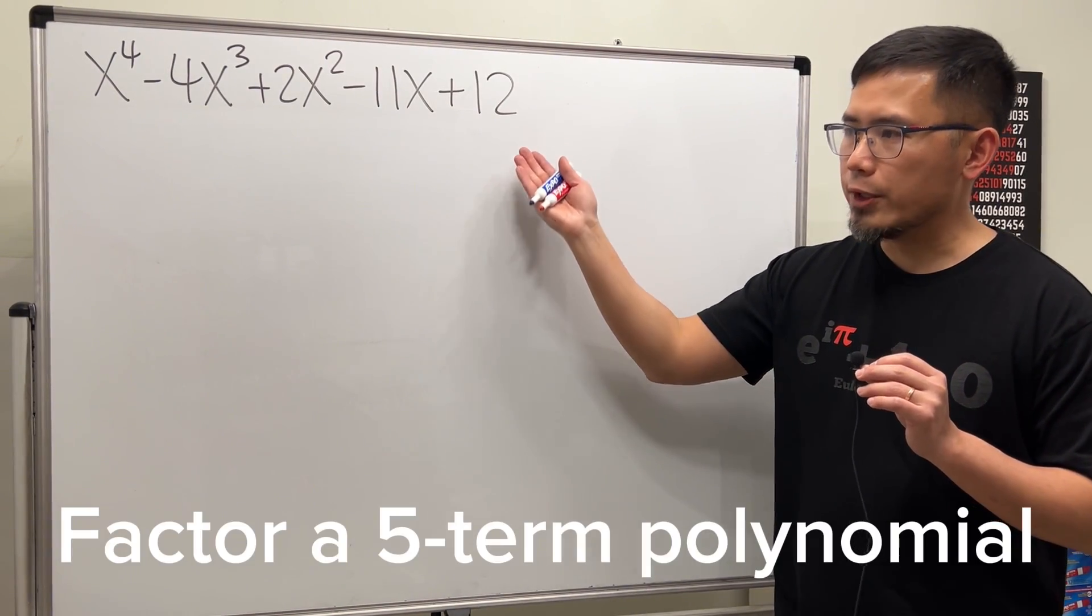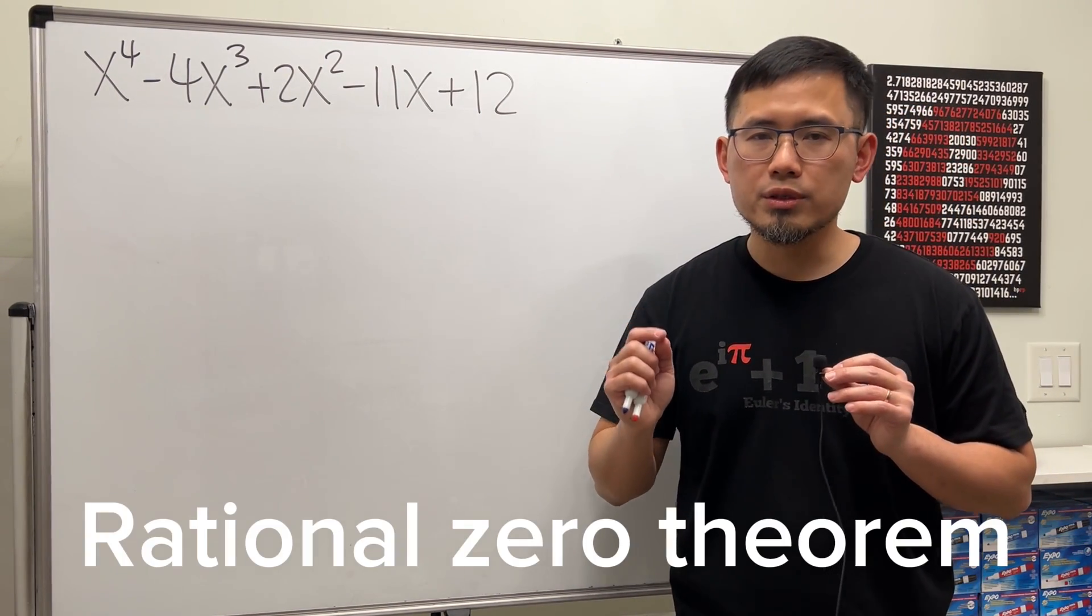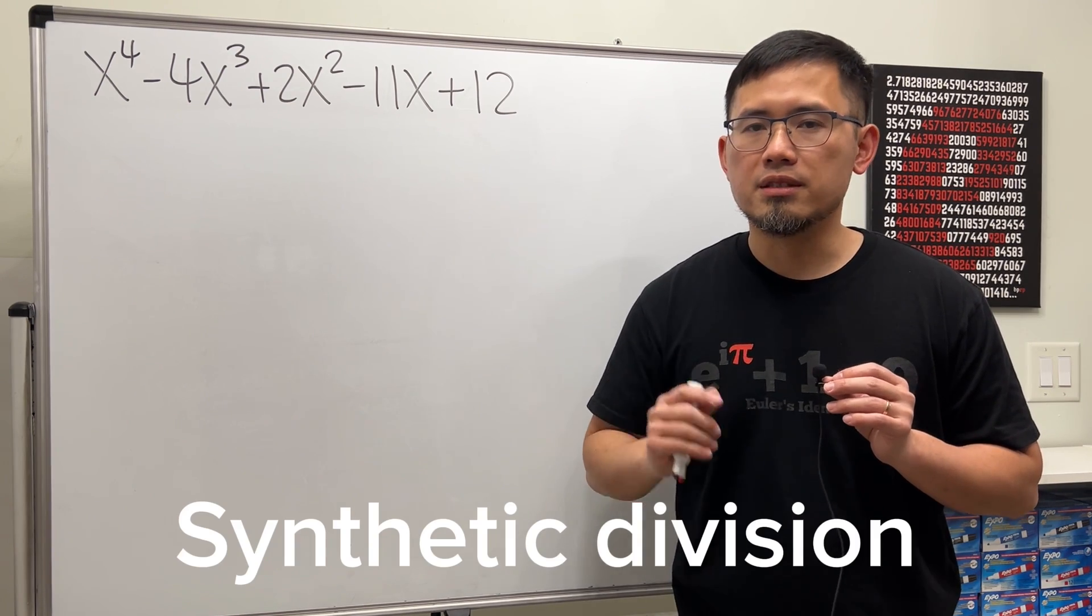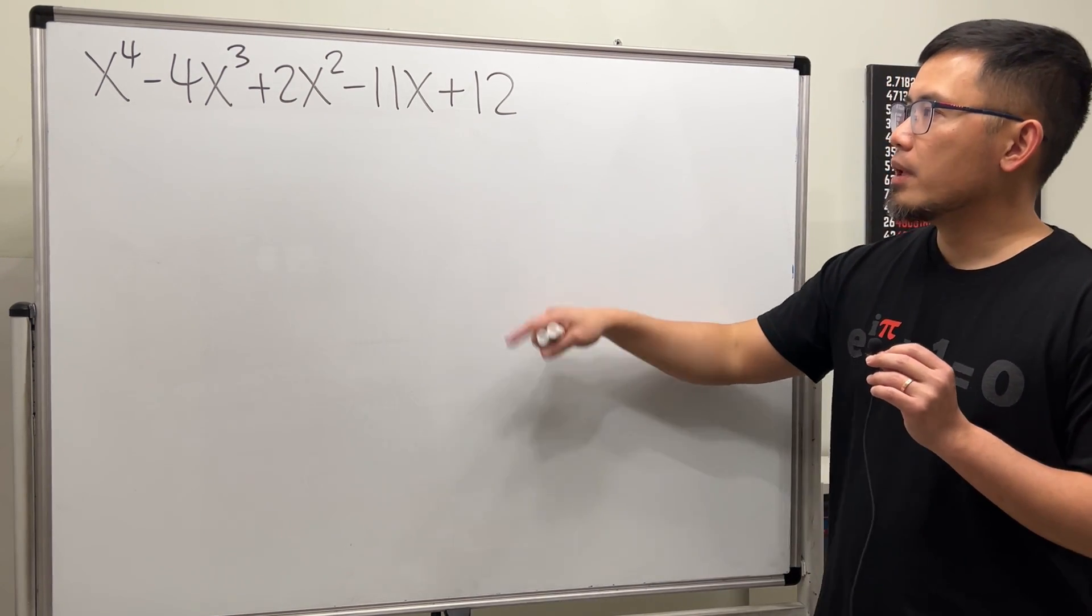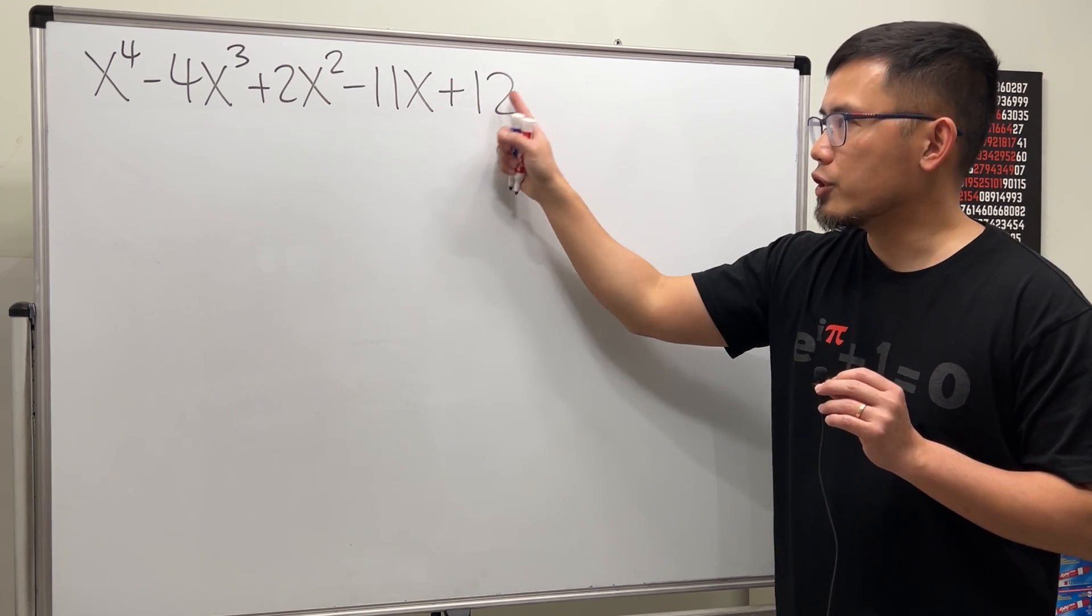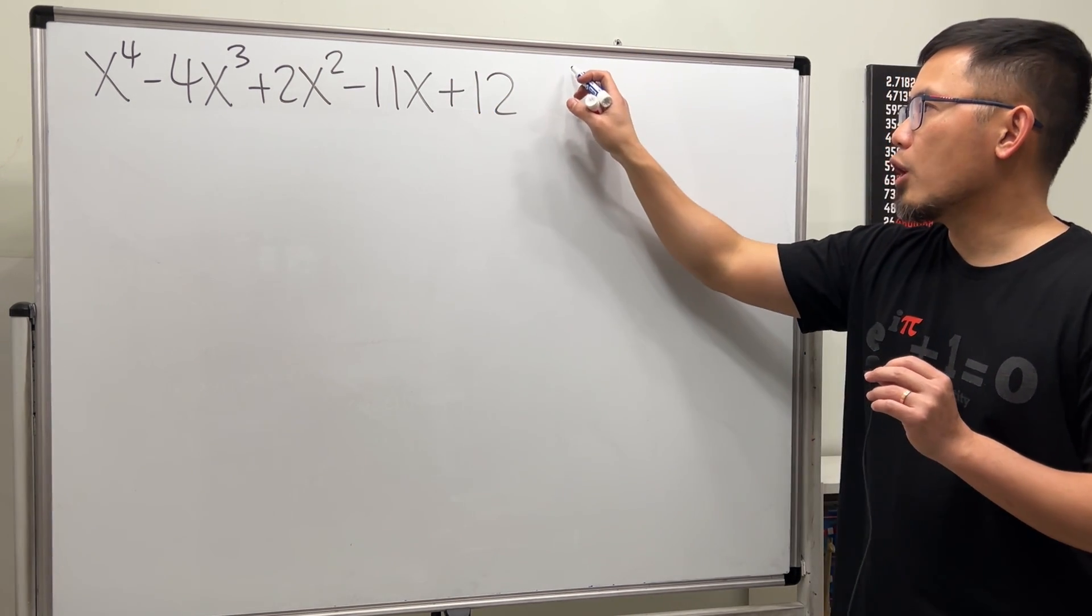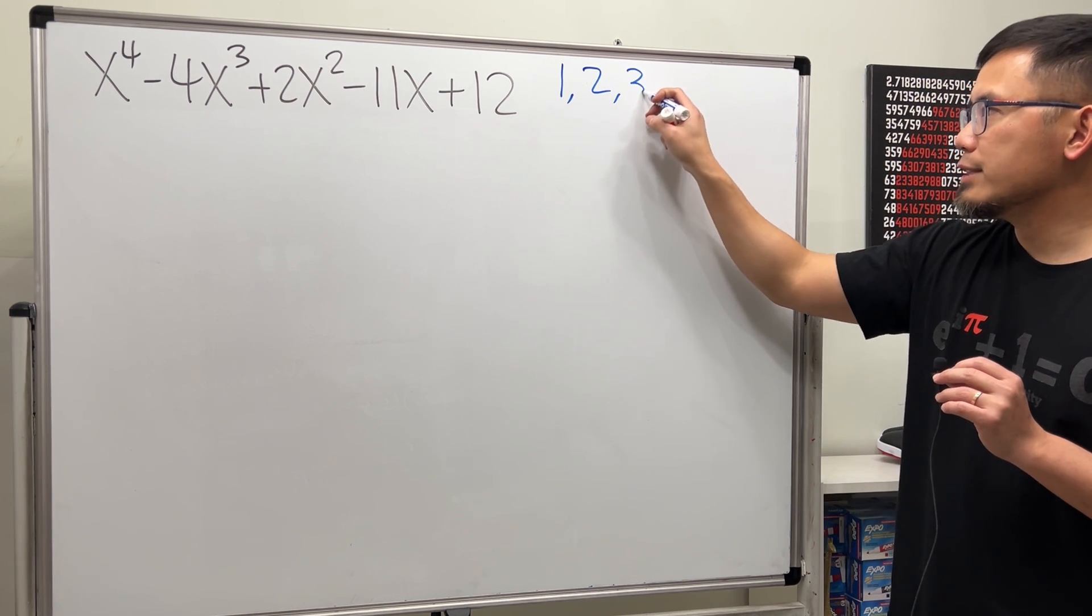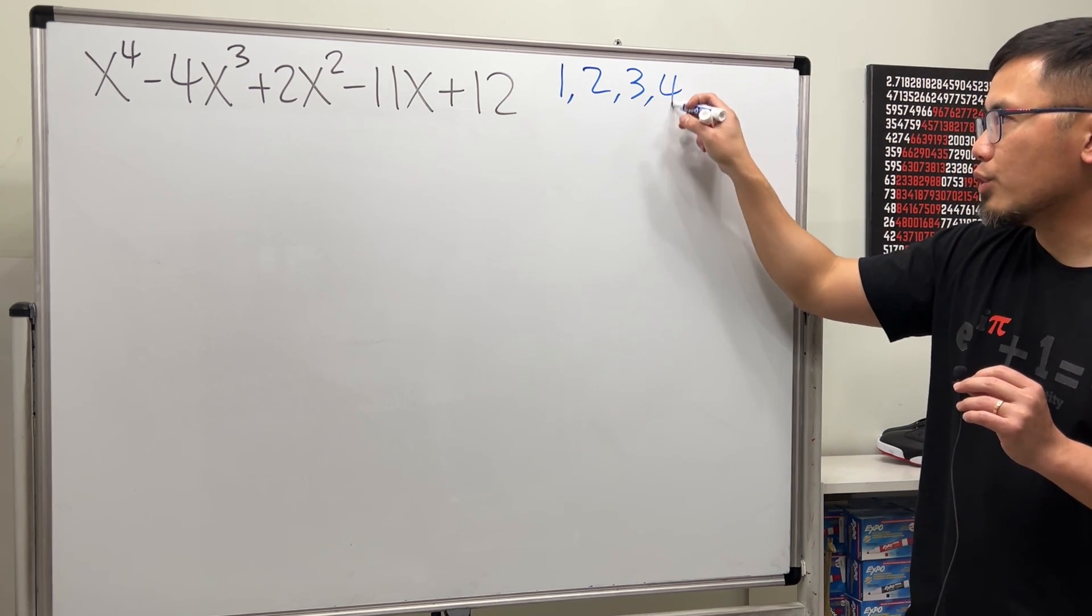Let's see how we can factor a five-term polynomial by using the rational zero theorem and also synthetic division. Here we go. First we are going to consider all the factors of the constant term, the 12 right here. We know 1 goes into 12, 2 goes into 12, 3 goes into 12, 4 goes into 12, not 5 but 6 does, and the last one is 12.